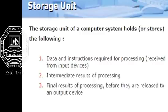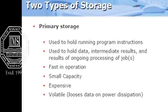The storage unit holds data and instructions required for processing, as well as final and intermediate results. There are two types of storage: primary and secondary. Primary memory is used to hold the currently running program or instructions, and also holds data, intermediate results, and results of an ongoing process. Primary memory is fast in operation, small in capacity, expensive, and volatile — meaning data is lost if the power supply is turned off.